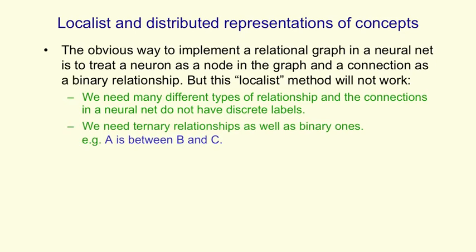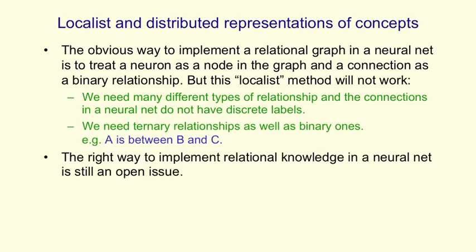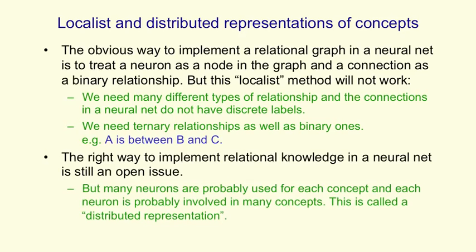Also we need to deal with ternary relationships, like A is between B and C. We still don't know for sure the right way to implement relational knowledge in a neural net. But it seems very probable that many neurons are used for representing each of the concepts we know, and each of those neurons is probably involved in dealing with many different concepts. This is called a distributed representation — a many-to-many mapping between concepts and neurons.